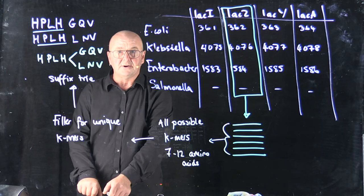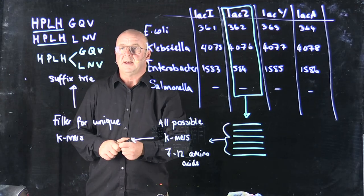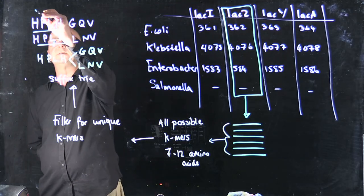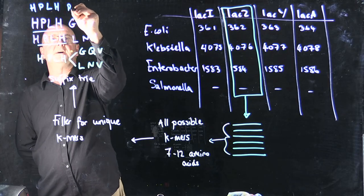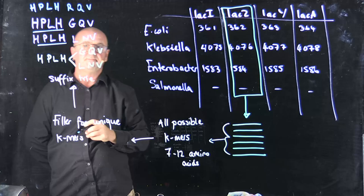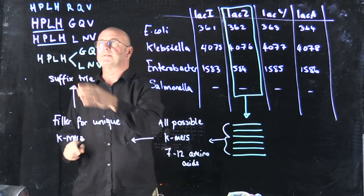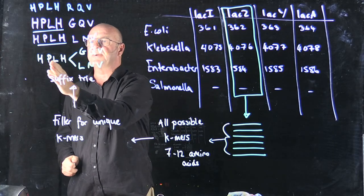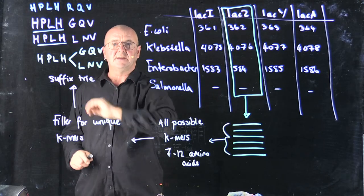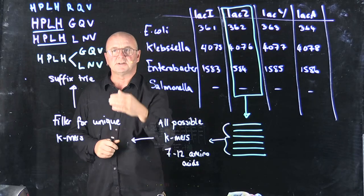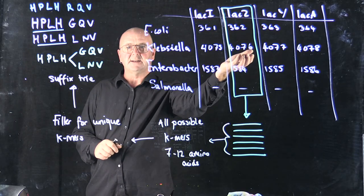Now, if I'm coming along with an unknown sequence, and maybe my unknown sequence is H-P-L-H-R-Q-V, all I have to do is look through and say, OK, I've got an H, and then I've got a P, and I've got an L, and I've got an H, but I don't have an R. So this is not a match to my suffix tree. This does not belong in beta-galactosidase.